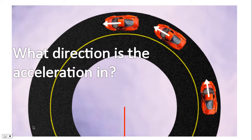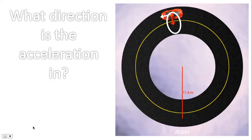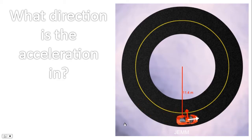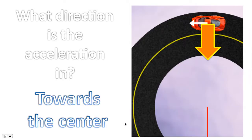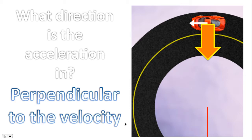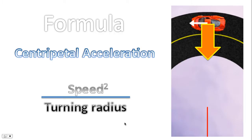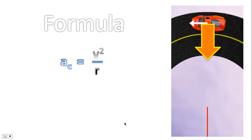So the question is: what direction is the acceleration actually in? The acceleration vector is always pointing towards the center of the circle. So the direction of the acceleration is towards the center — it's also perpendicular to the velocity. These are the characteristics of centripetal acceleration: acceleration must point towards the center and it must be perpendicular to the velocity. The formula for centripetal acceleration is speed squared divided by turning radius, or symbolically: a_c = v² / r, where the subscript C stands for centripetal.